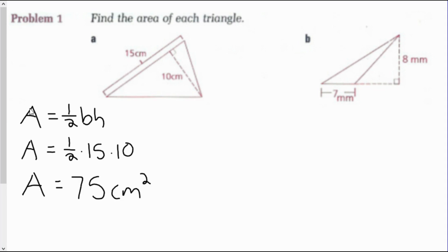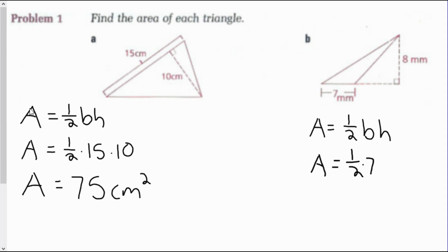Looking at Example B: I have a height of 8 millimeters and a base of 7 millimeters. Again, area of a triangle is one-half base times height. So one-half times 7 times 8. The area would be 28 millimeters squared.